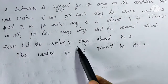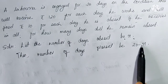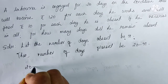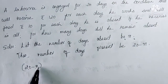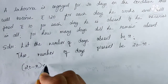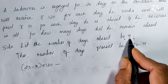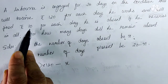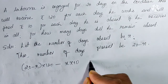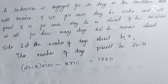Let the number of days absent be X. Then the number of days present is (20 minus X), because 20 is the total number of days. For each day present he receives Rs. 120, so the amount earned for being present is (20 minus X) into 120. For the days absent, the number of absent days is X and the fine is Rs. 10, so X into 10 is subtracted. Total amount received is Rs. 1880. This is the equation we get from the question.